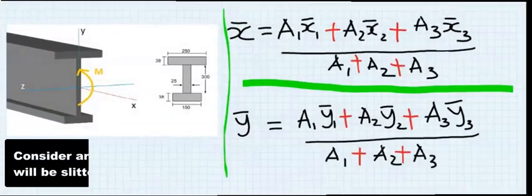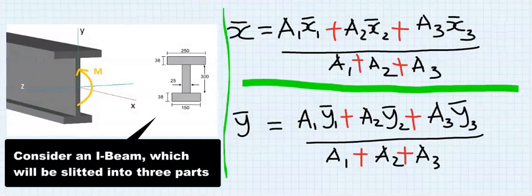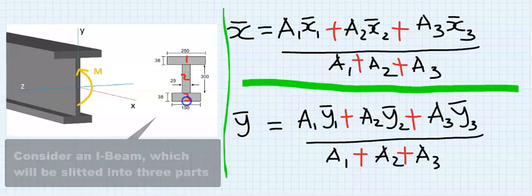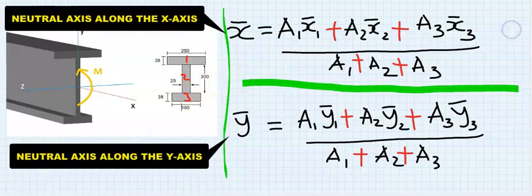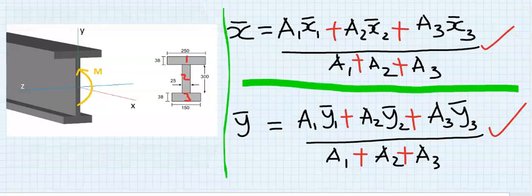Considering the section of an I-beam, you're going to split it into three. One, two, three. Then, you're going to apply this formula and also this formula to find the centroid. This is along the X axis and this is along the Y axis.